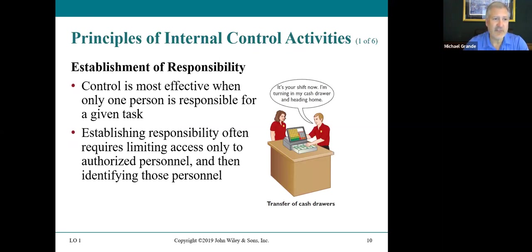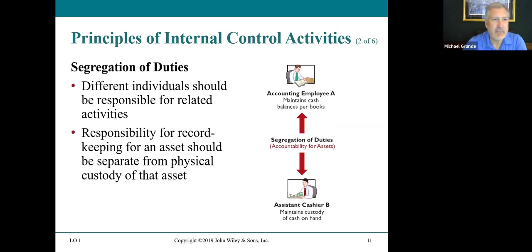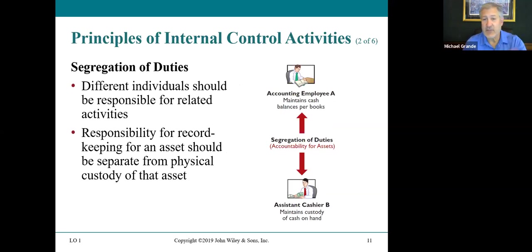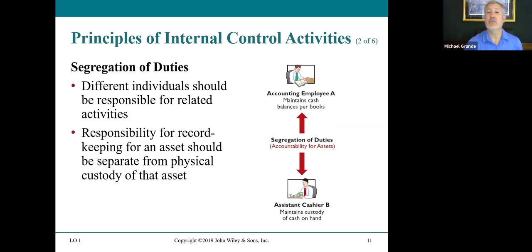Establishing responsibility often requires limiting access only to authorized personnel and identifying those personnel. Segregation of duties means different individuals should be responsible for related activities. Responsibility for record-keeping for an asset should be separate from the physical custody of that asset. For example, Employee A maintains cash balances per the books, whereas the cashier maintains custody of the cash on hand. One employee records journal entries; another employee collects the cash.